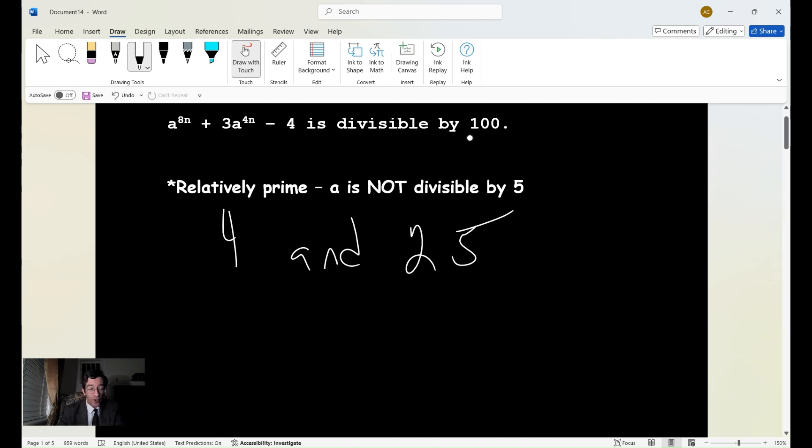So what we could go ahead and do is we can label this number, this expression as A_n. So if we label this as A_n, we have a^(8n) + 3a^(4n) - 4.